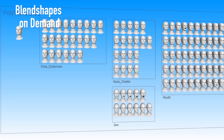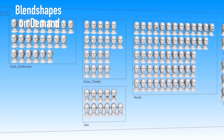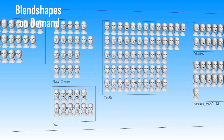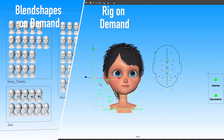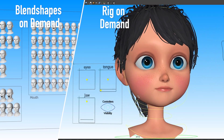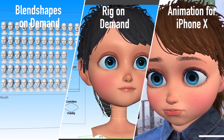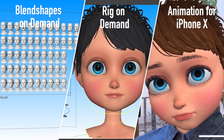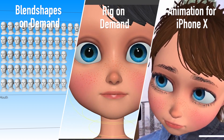Blend Shapes On Demand creates a complete set of blend shapes perfectly adapted to any model. Rig On Demand is a flexible and fully automatic rigging solution for Maya, and Animation for iPhone X animates your characters with the iPhone X face tracking.